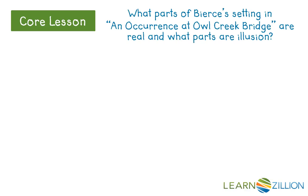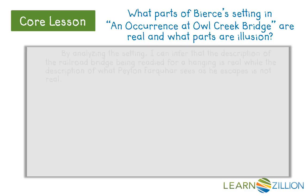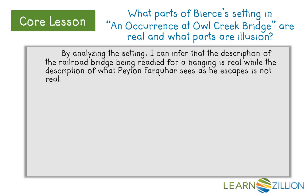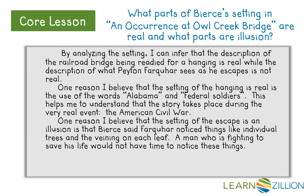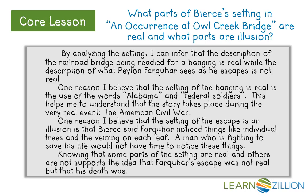Now we can go back and answer our initial question: what parts of Bierce's setting in 'An Occurrence at Owl Creek Bridge' are real, and what parts are illusion? By analyzing the setting, I can infer that the description of the railroad bridge being readied for a hanging is real, while the description of what Peyton Farquhar sees as he escapes is not real. One reason I believe the setting of the hanging is real is the use of the words 'Alabama' and 'federal soldiers,' helping me understand the story takes place during the very real event, the American Civil War. One reason I believe the setting of the escape is an illusion is that Bierce said Farquhar noticed things like individual trees and the veining on each leaf — a man fighting to save his life would not have time to notice these things. Knowing that some parts of the setting are real and others are not supports the idea that Farquhar's escape was not real, but that his death was.